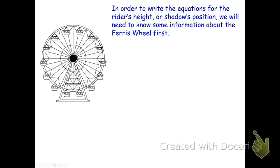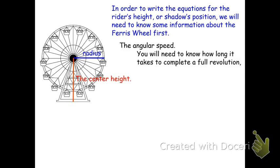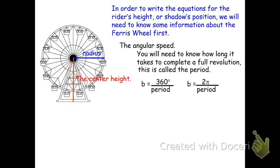To write an equation for the rider's height or shadow position, we need to know the center height, the radius, and the angular speed. To find the angular speed, we need to know how long it takes to complete a full revolution — the period. The angular speed, or b, can be found using 360 degrees divided by the period, or 2π divided by the period, depending on whether we want degrees or radians.